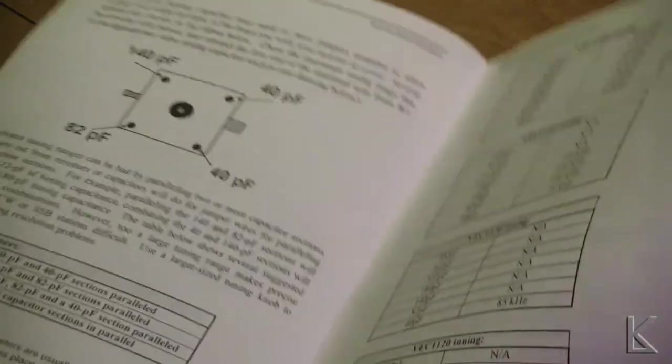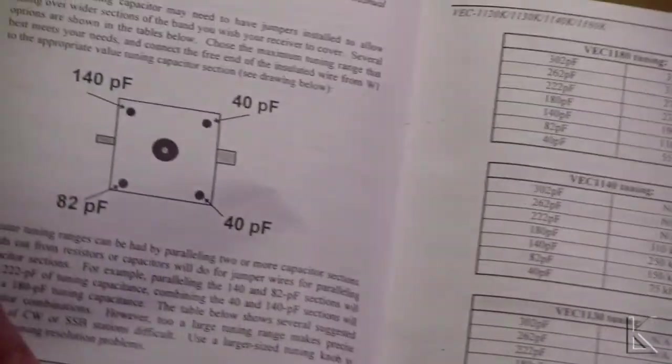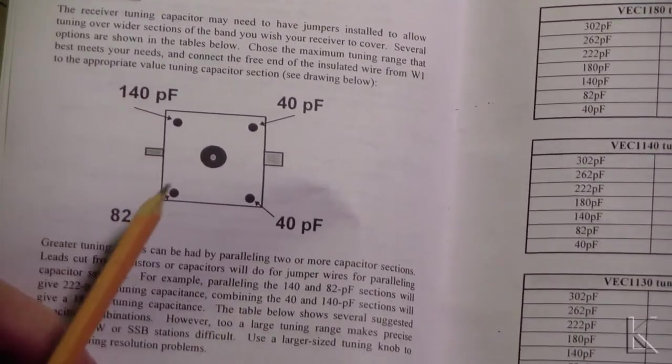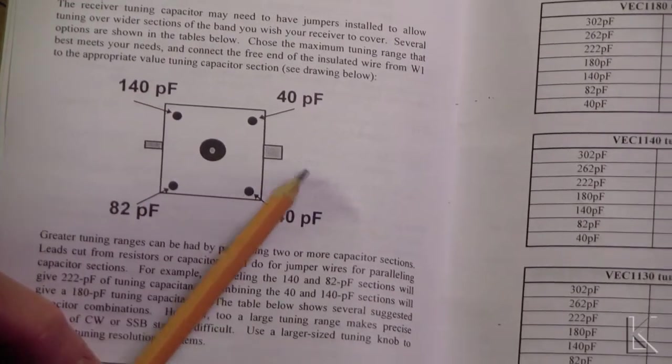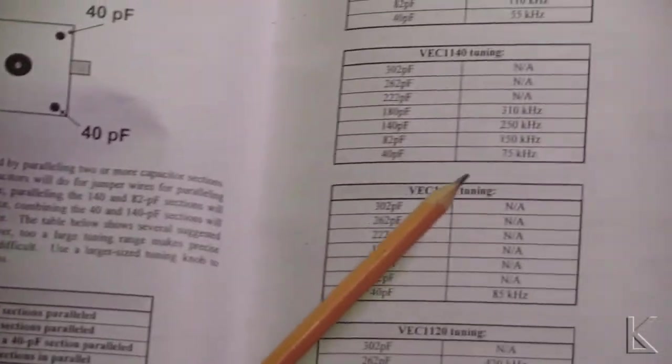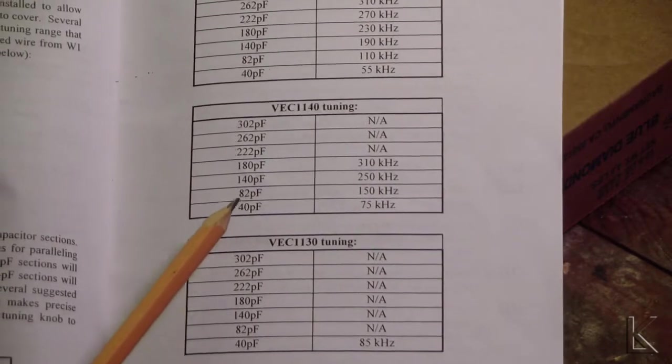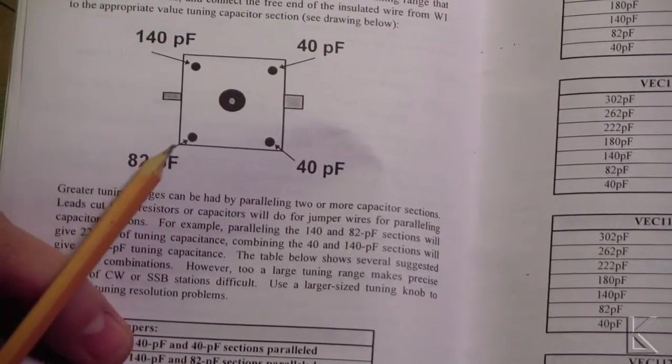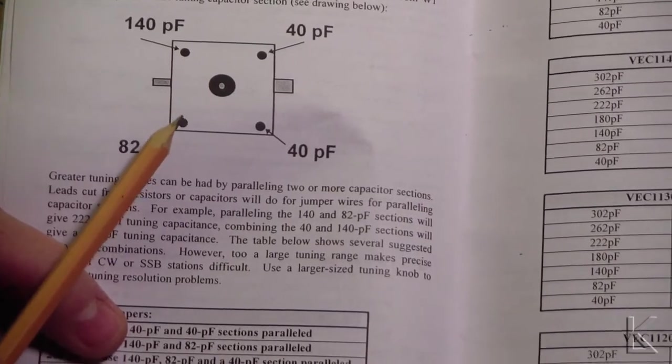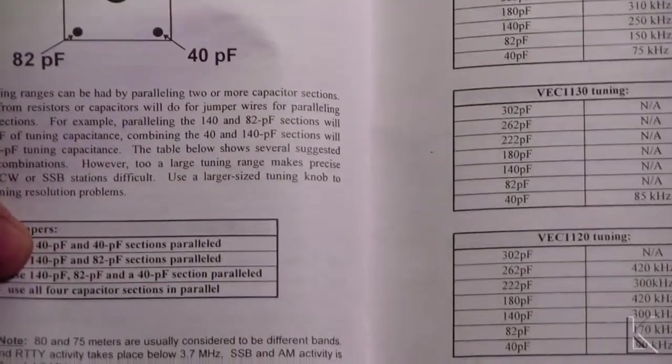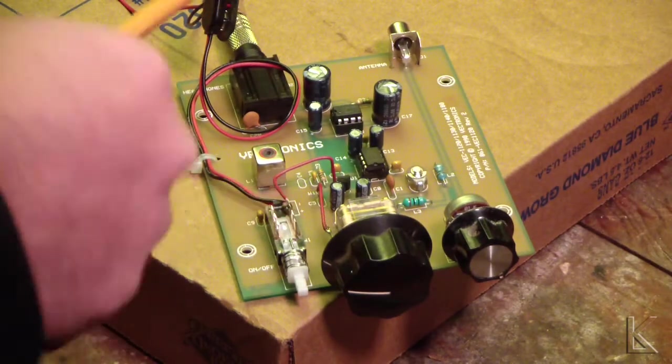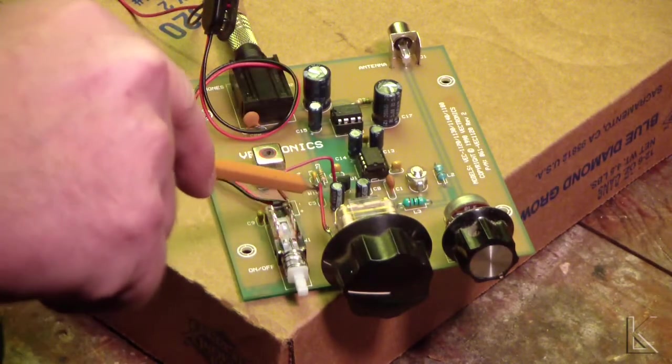And when you look at the front of the capacitor, there are the different sections. And what you do is you parallel one or more sections depending upon the capacitance you want. In this case, for mine, I wanted the 82 picofarads for 150 kilohertz. So that's only one tap. And conveniently, that point came out the back of the capacitor here. So I was able to tap the wire right to it. Short little run.